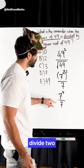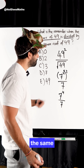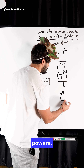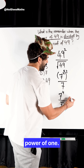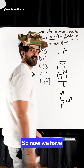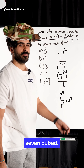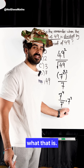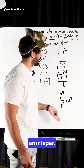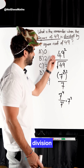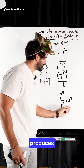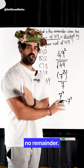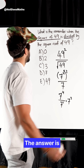Now, when I divide two numbers with the same base, I take away the powers. That's seven to the power of one — so now we have seven cubed. I don't even need to work out what that is. This is an integer, meaning this division produces an integer, so there is no remainder.